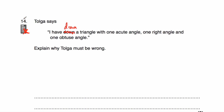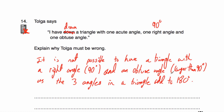Question 14 says: Tolga says he's drawn a triangle with an acute angle, a right angle and an obtuse angle. Explain why Tolga must be wrong. The angles in a triangle add up to 180 degrees. A right angle is 90 degrees and an obtuse angle is larger than 90 degrees, so a right angle plus an obtuse angle already exceeds 180 degrees — before even adding the acute angle. So it's not possible to have a triangle with both a right angle and an obtuse angle.